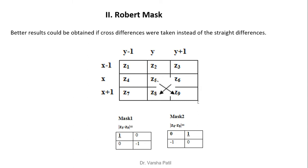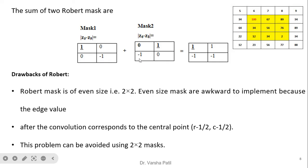The Robert operator uses cross differences instead of straight differences, as the researcher found this gives better edge detection results. Instead of z5-z8 and z5-z6, we take z5-z9 and z6-z8. This gives mask 1 as [1, 0; 0, -1] and mask 2 as [0, 1; -1, 0]. Adding them gives a combined mask with coefficient sum of zero.